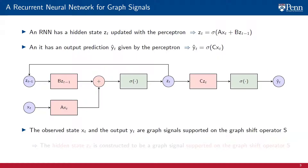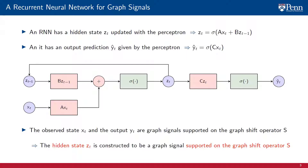In this video, we are interested in situations where the observed state Xt and the output Yt that we are trying to estimate are graph signals supported on a common shift operator S. We are therefore going to require that the hidden state Zt also be a graph signal supported on the same graph shift operator S. This requirement is not necessary, but requiring the hidden state Zt to be a graph signal allows for the use of graph filters. This is likely to lead to architectures that are permutation-equivariant and retain the stability and transferability properties of graph filters and conventional GNNs.